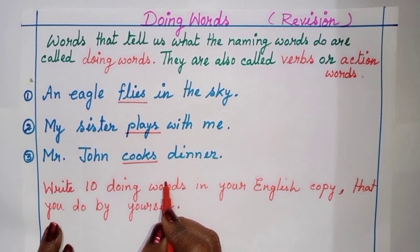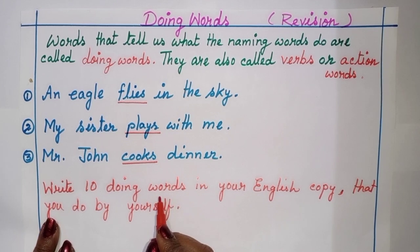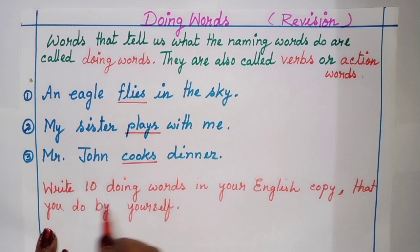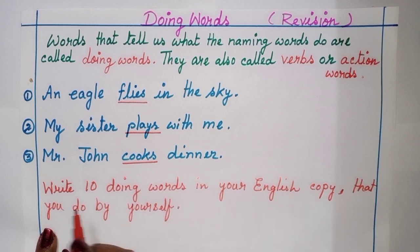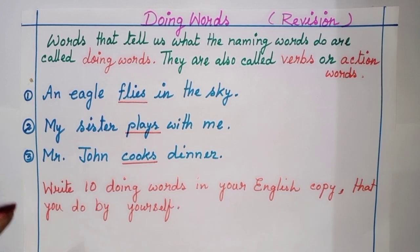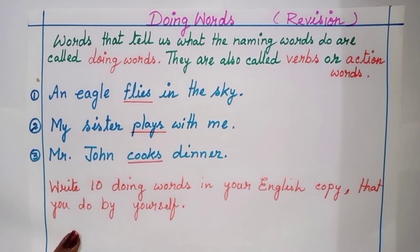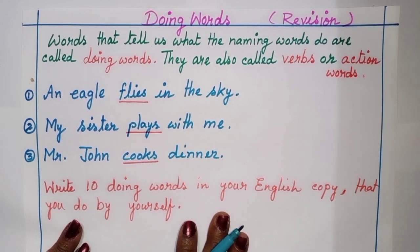There are many more examples. When you open your English language book, chapter number seven, you will see them. Now, what you need to do is write ten doing words in your English copy — things that you do by yourself all day long.